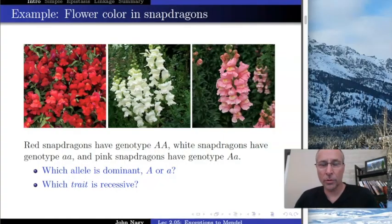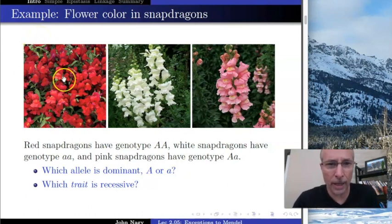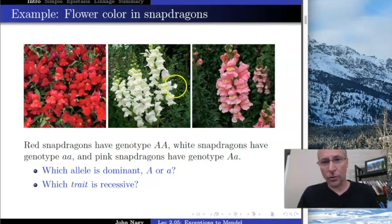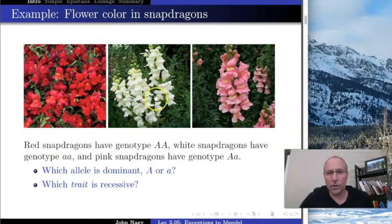We've studied Mendel's paper in great detail, so we know genetics. Now consider these snapdragons — they're called that because they're shaped like the face of a dragon. If I were to take this one and interbreed it with this one, these two different varieties, what would you predict? Using your understanding of Mendel's predictions, you'd predict pink. If I mix red with white, I get pink.